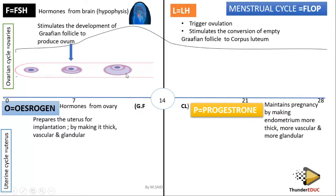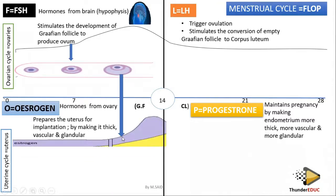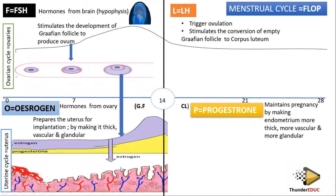The Graafian follicle is very important. As it develops, it produces estrogen. So estrogen starts increasing — but only after FSH has increased, because FSH causes the development of the Graafian follicle, which then produces estrogen. Estrogen then starts developing the endometrium wall, making the uterus thick, vesicular, and granular. Before estrogen increased, the wall was thin; now it's growing because estrogen has started rising.